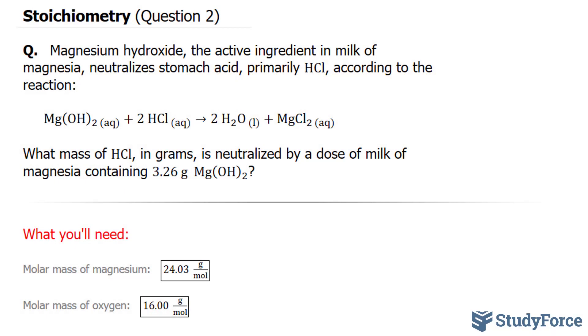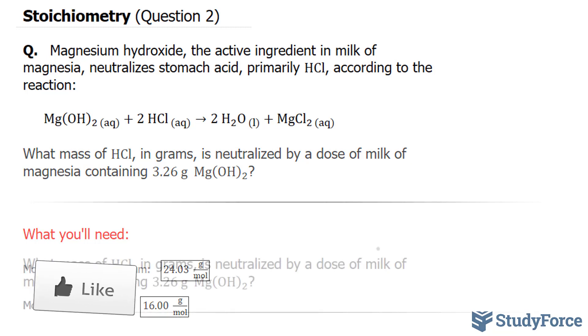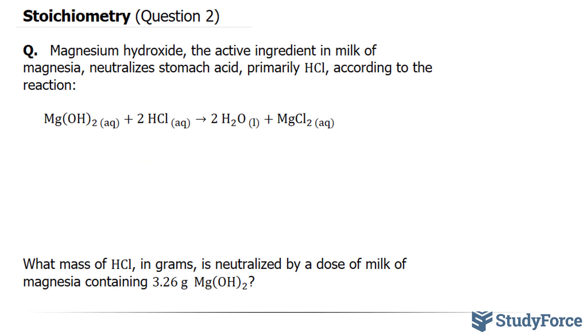The first thing I want to do is write down everything that has been provided. Keep in mind that if your chemical equation was not balanced, you would have to do that first. That's very important. We're told that the mass of Mg(OH)2 is right here, so I'll write that underneath. M for mass equals 3.26 grams. We want to find out the mass of HCl.